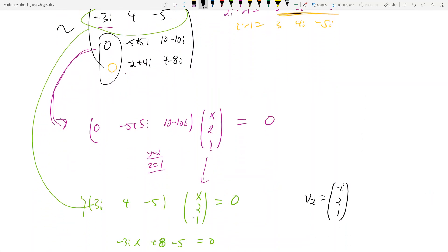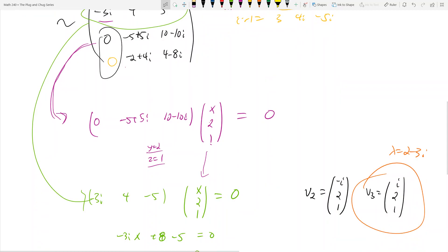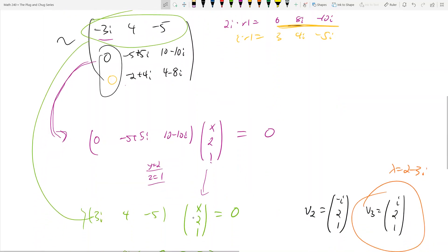Lastly, v3 is simply going to be (i, 2, 1), and that's because we're leveraging the fact that complex eigenvalues come in conjugate pairs. Any complex value in v2, so that's just this -i, goes to its conjugate, which is positive i. So it goes from -i to positive i in the last eigenvector. This v3 vector corresponds to lambda equals 2 minus 3i, while v2 corresponds to lambda equals 2 plus 3i.